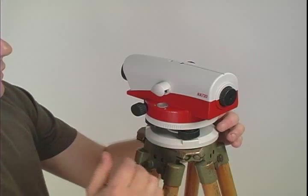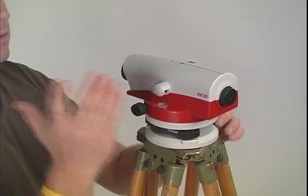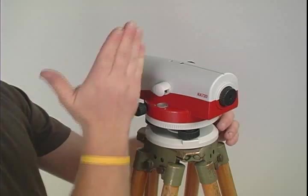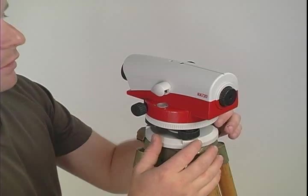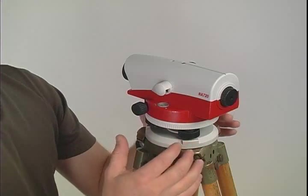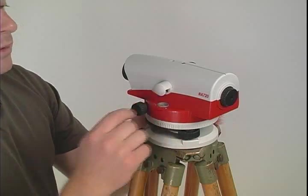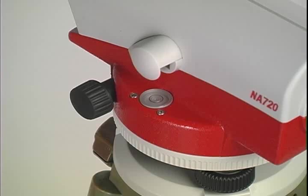The next thing is to move the back screw so that the bubble will move in this direction or perpendicular to the telescope. So you move the foot screws until you get the bubble perfectly in the center of the vial. Now, once the circular bubble is in the center, the level is only roughly leveled.